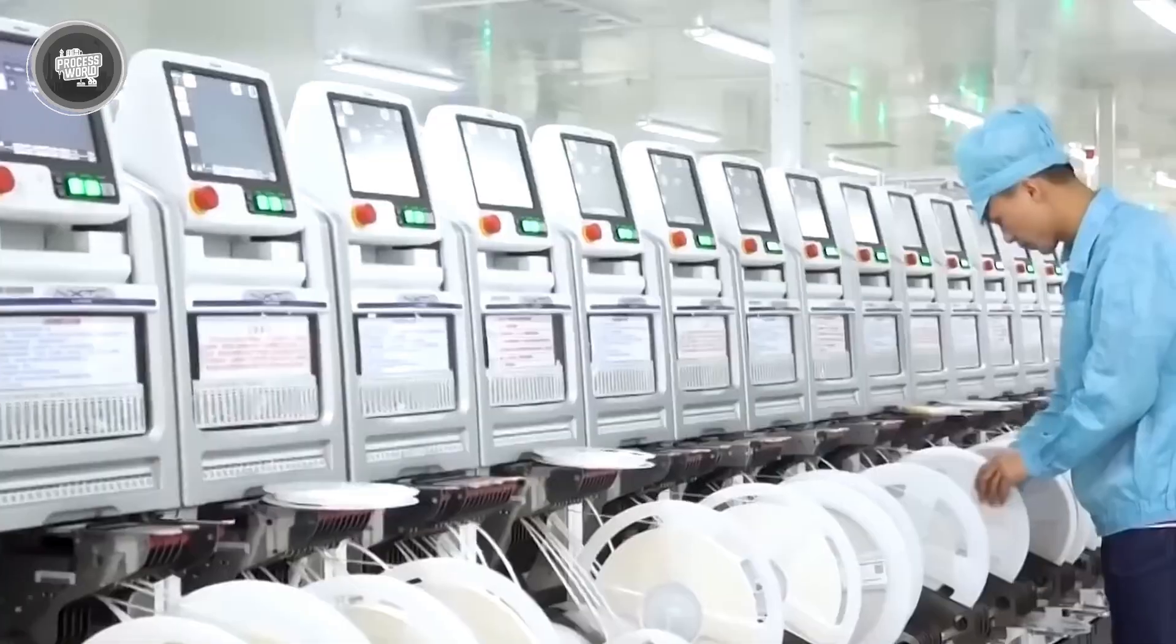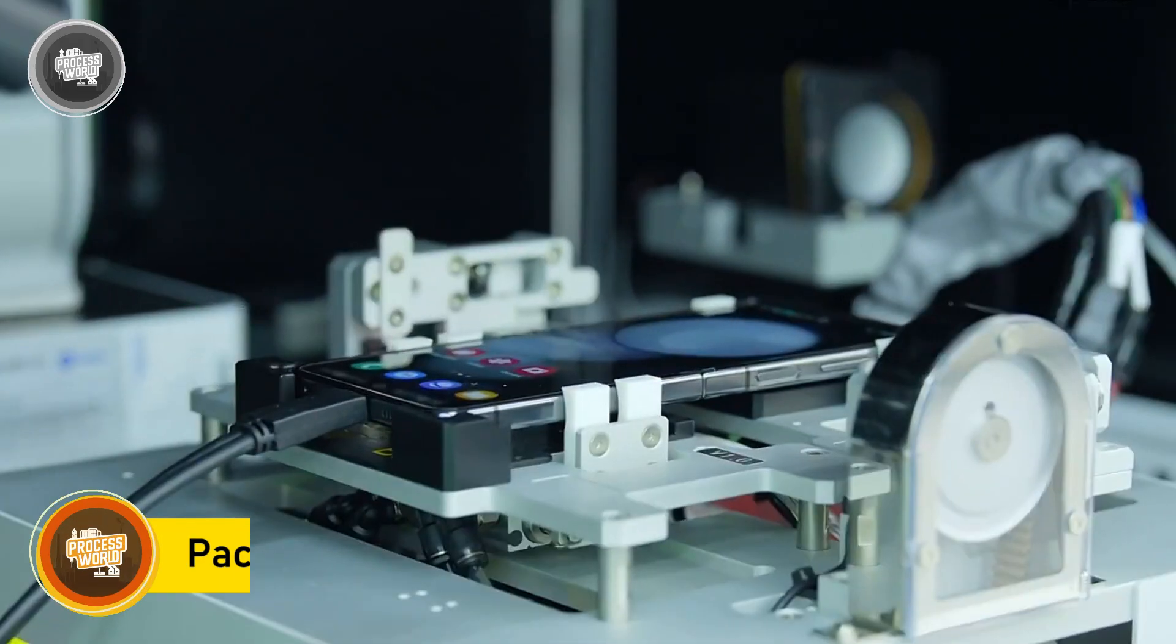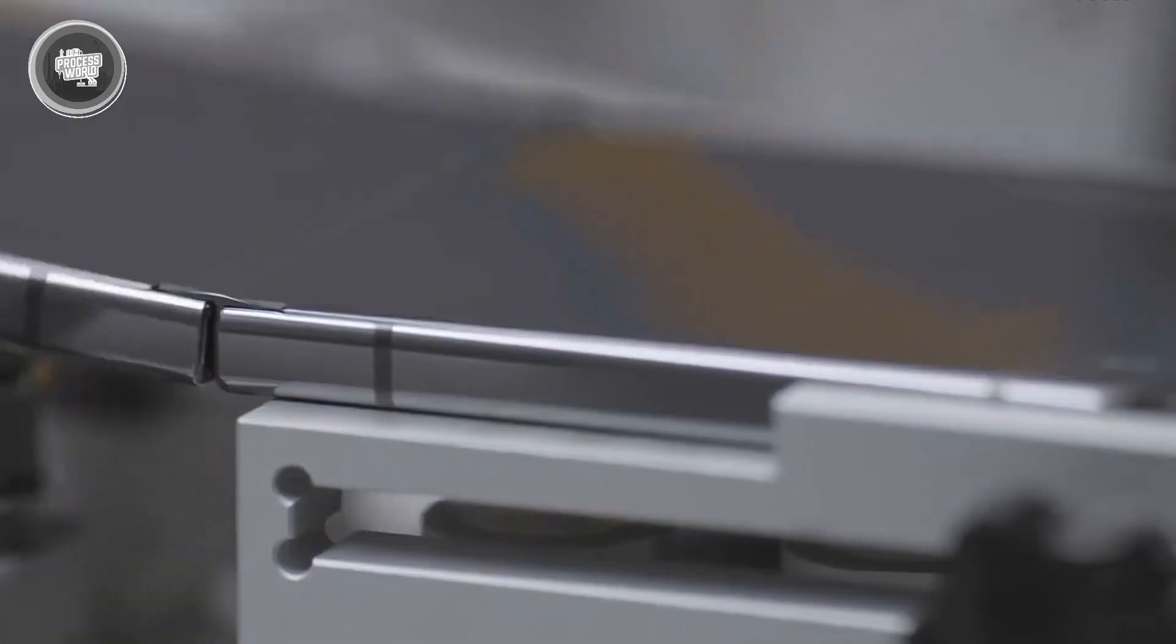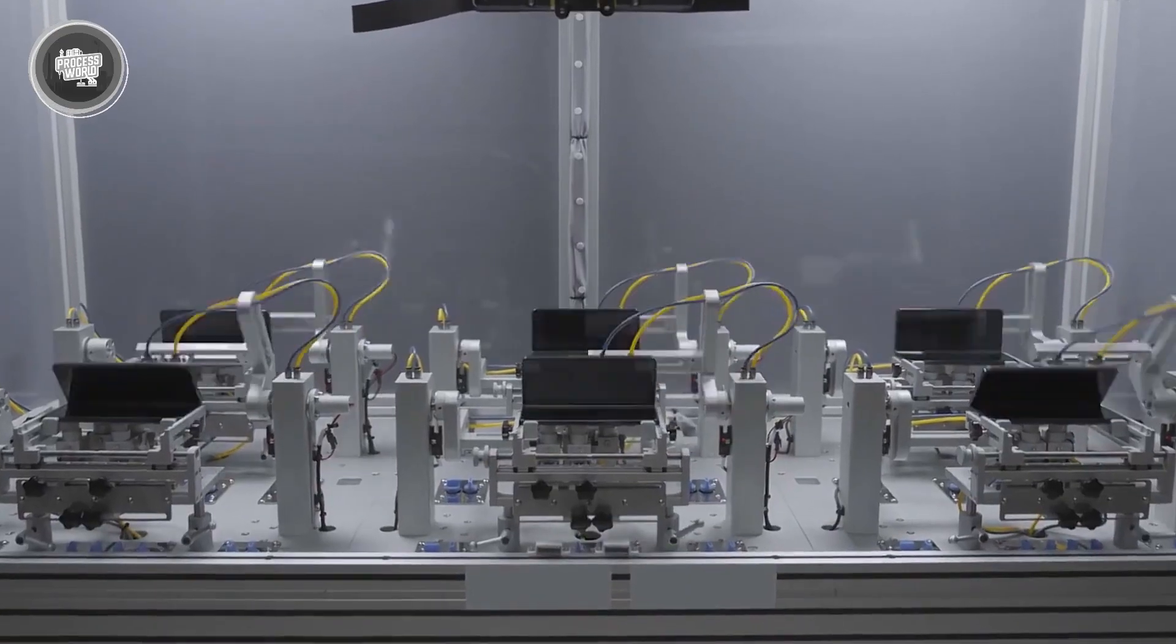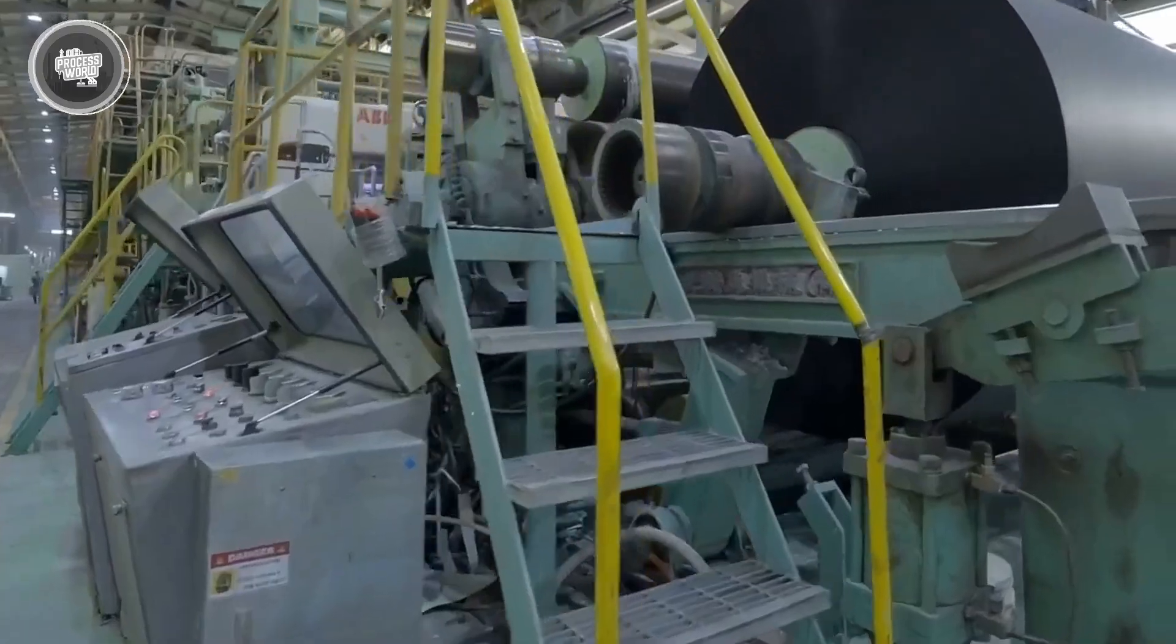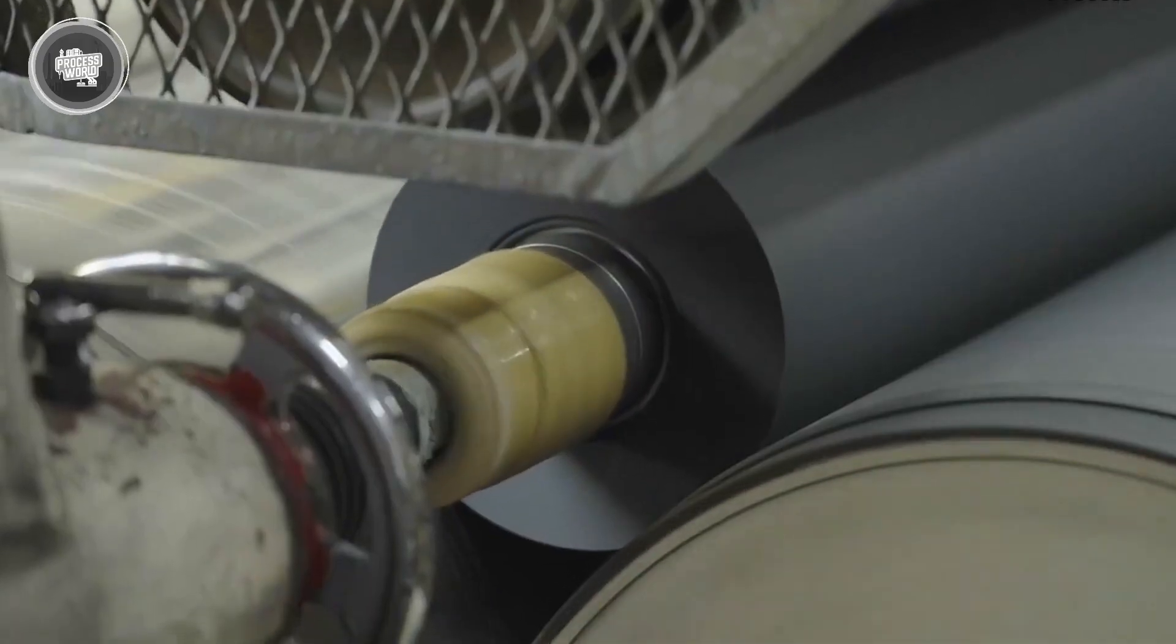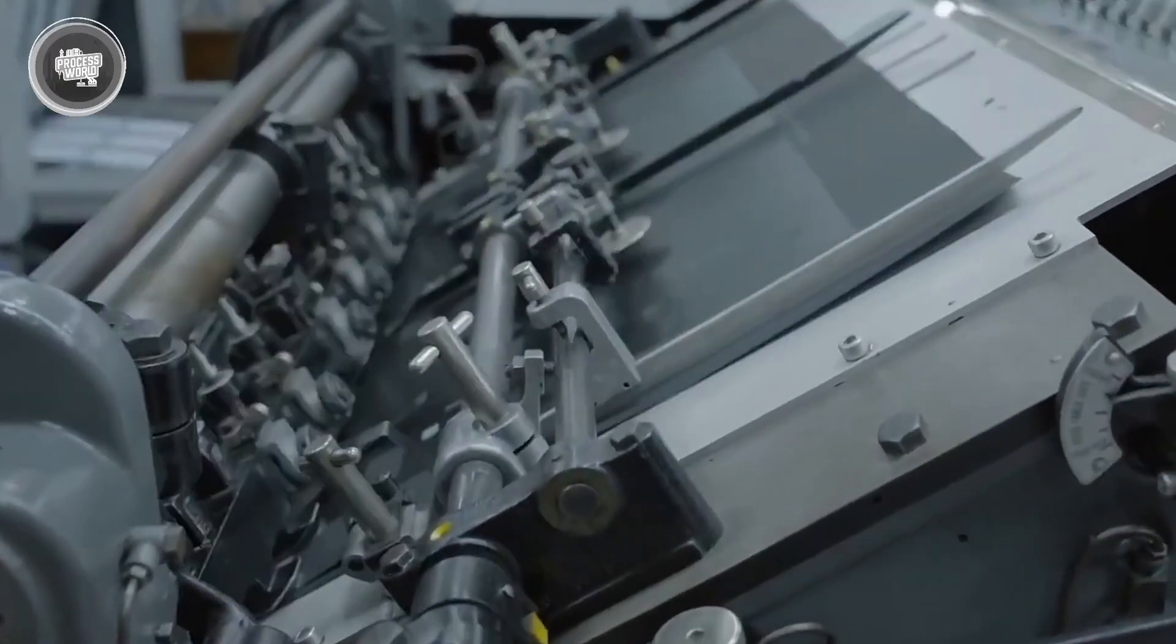Once the phones pass all the tests, they're sent to the packaging area. This part of the factory is clean, quiet, and incredibly organized. Workers and machines work side-by-side to make sure every phone is boxed safely, cleanly, and ready for shipping. First, each phone gets a final wipe down to remove dust or fingerprints from the screen and frame. Then it's placed into a recyclable paper tray that holds the device securely in place. Samsung has moved away from plastic packaging in most of its phones and now uses paper-based materials, soy-based ink, and fiber wraps instead of plastic films.